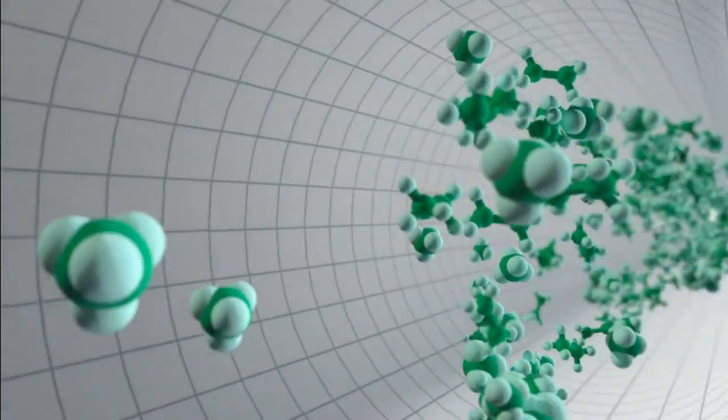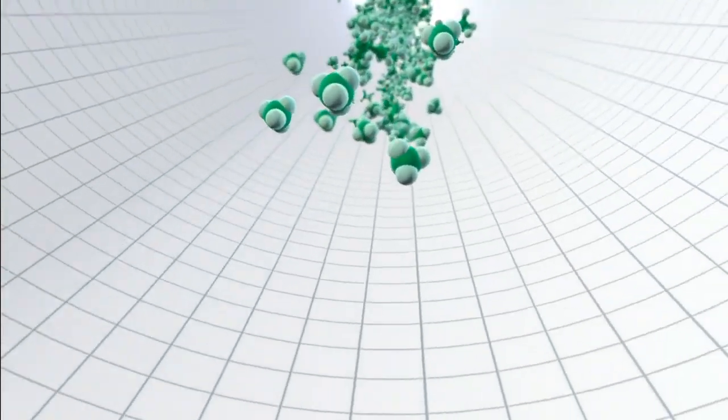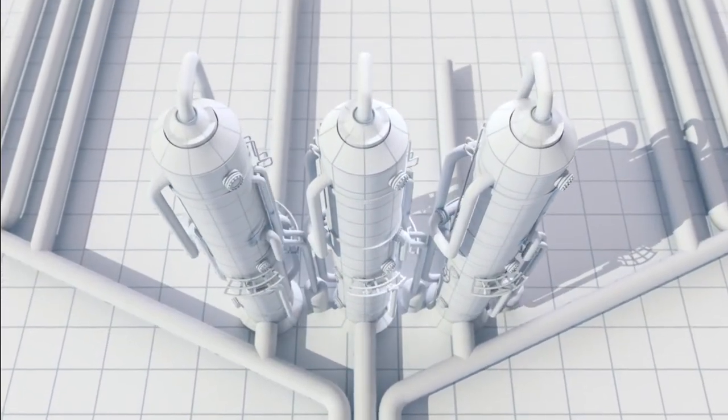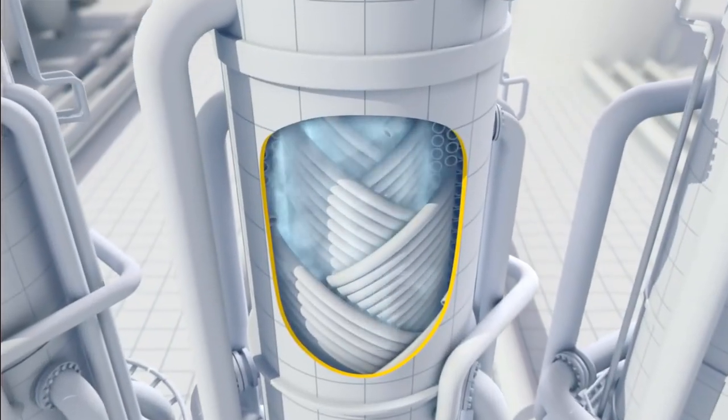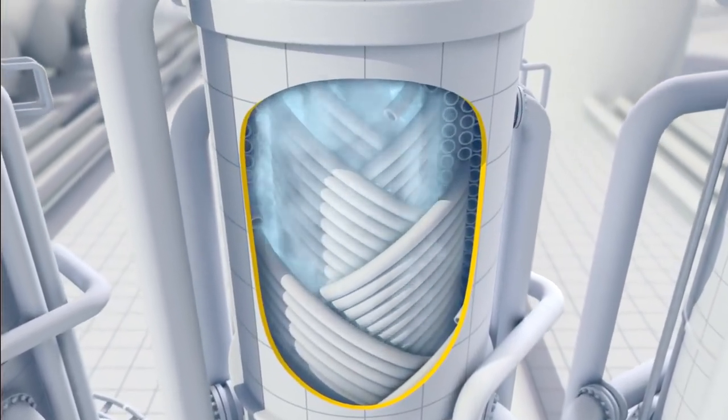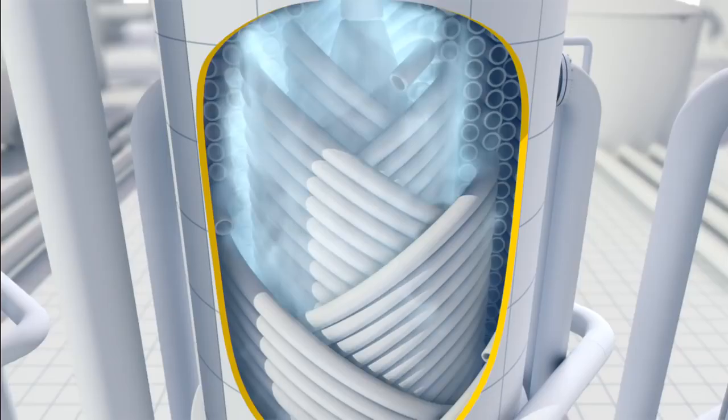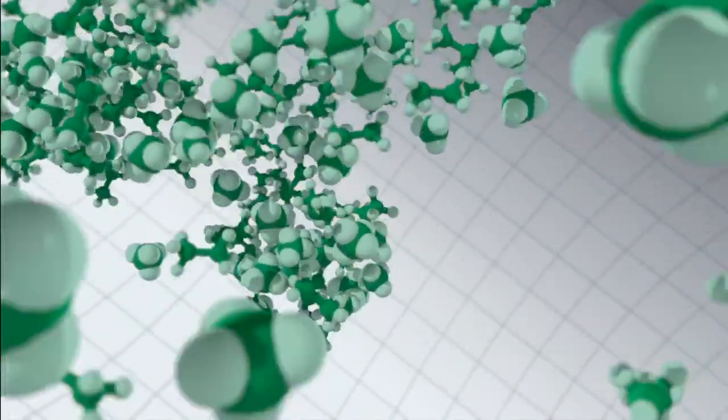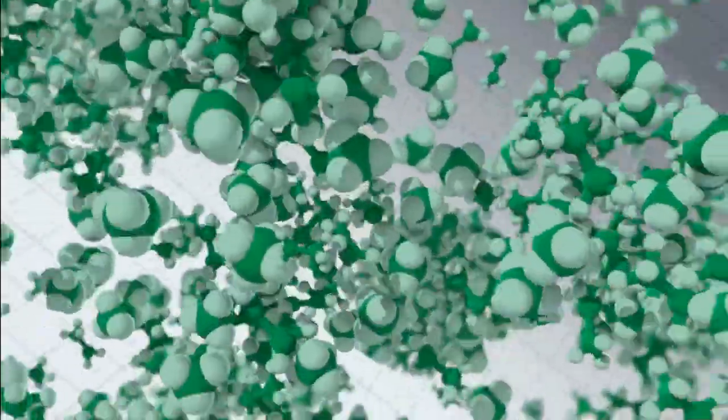Now the purified natural gas, methane with some ethane, is ready to be liquefied. This happens in heat exchangers. A coolant, chilled by giant refrigerators, absorbs the heat from the natural gas. It cools the gas to minus 162 degrees centigrade, shrinking its volume by 600 times.